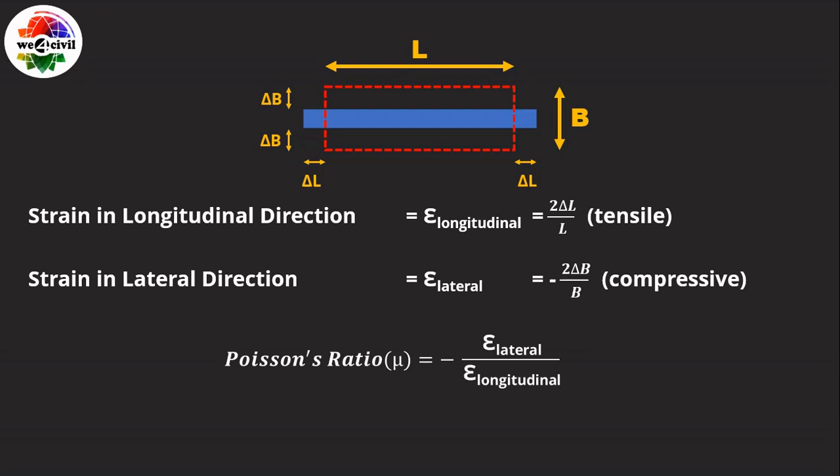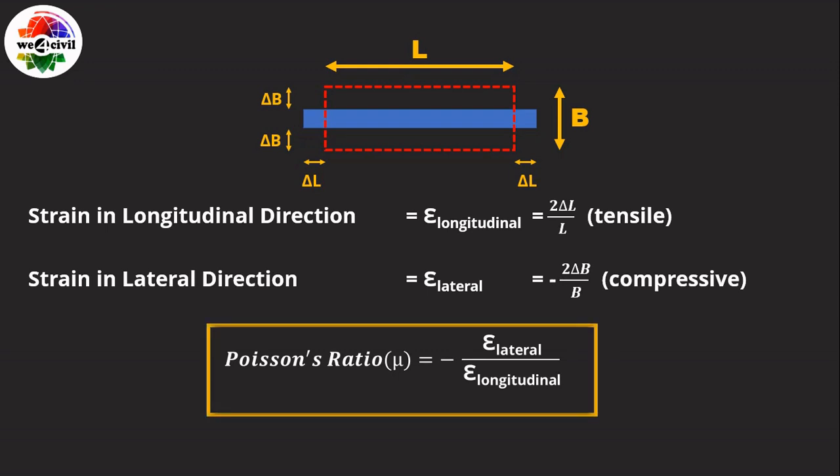In actual calculation we get a negative value, but Poisson made Poisson's ratio a positive value by adding a negative sign to the equation. This is the basic equation of Poisson's ratio.